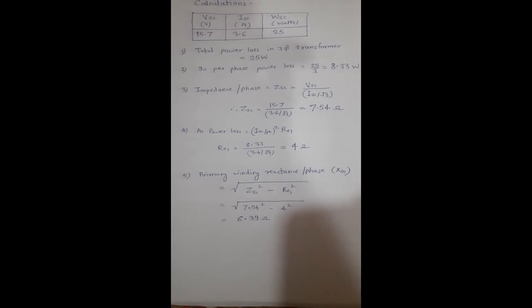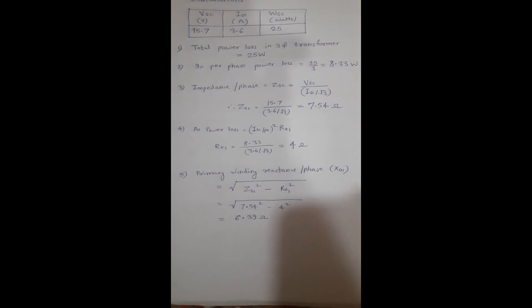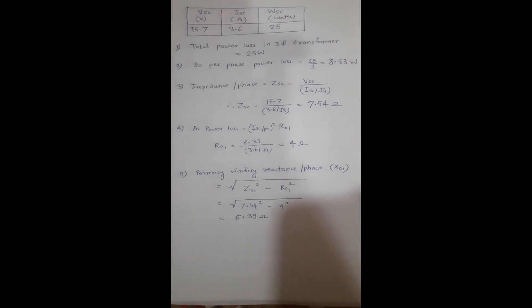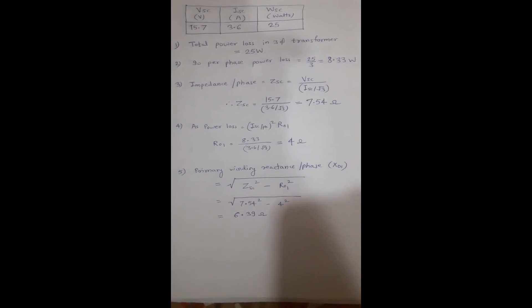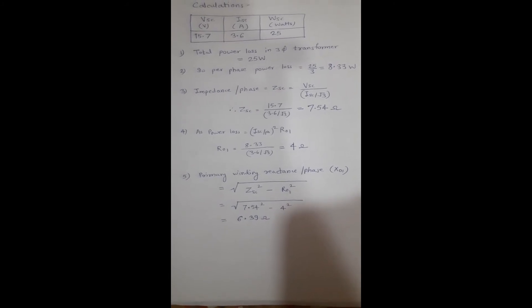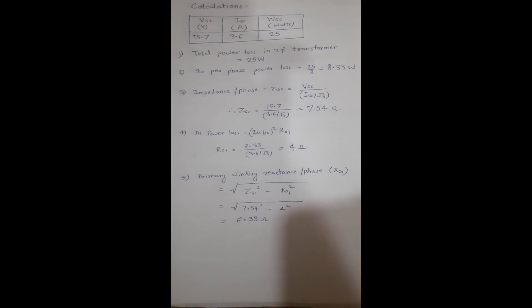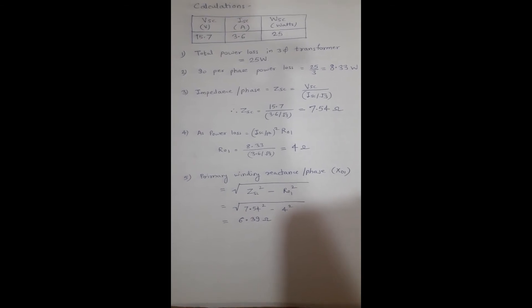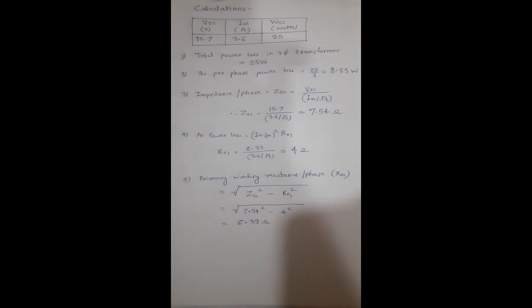The next step is finding the resistance per phase referred to primary, R01. Rearranging the terms, we get 8.33 ÷ (3.6 ÷ √3)² = 4 ohms. So R01 per phase is 4 ohms. Generally the value of R01 is kept minimum because it is responsible for power loss in the transformer, so to reduce power loss the value of R01 should be as small as possible.